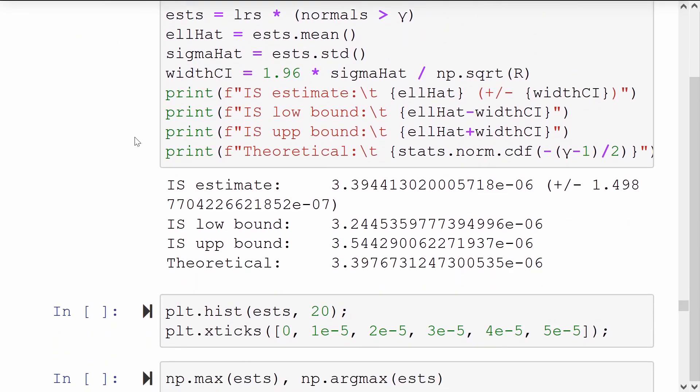Now we see that the importance sampling estimate is much more accurate than the crude Monte Carlo failure, which gave us the number zero. Here we match the first three significant digits between our estimate and the true value.